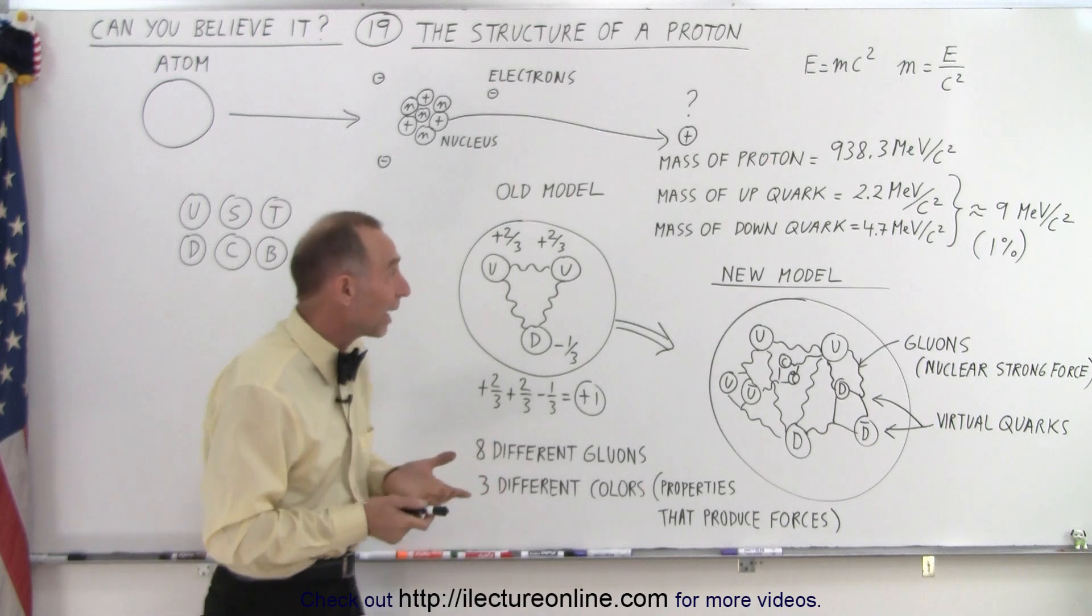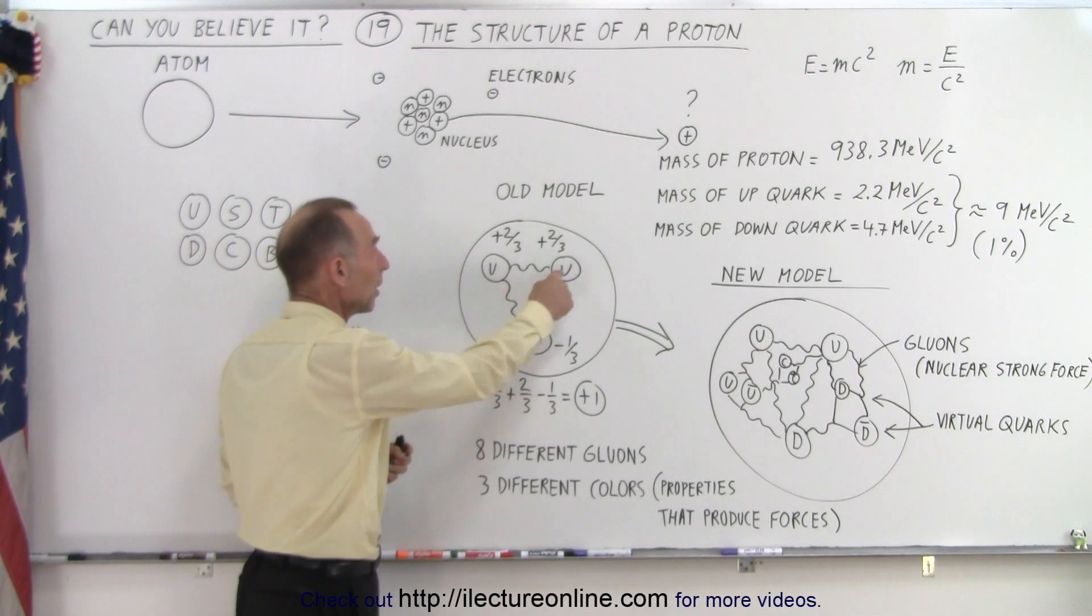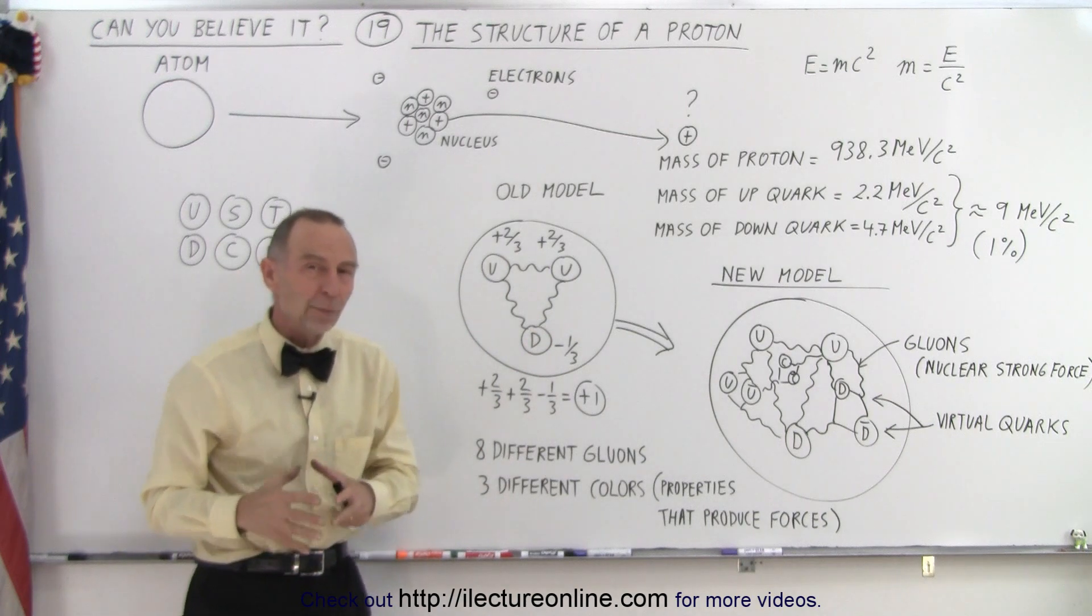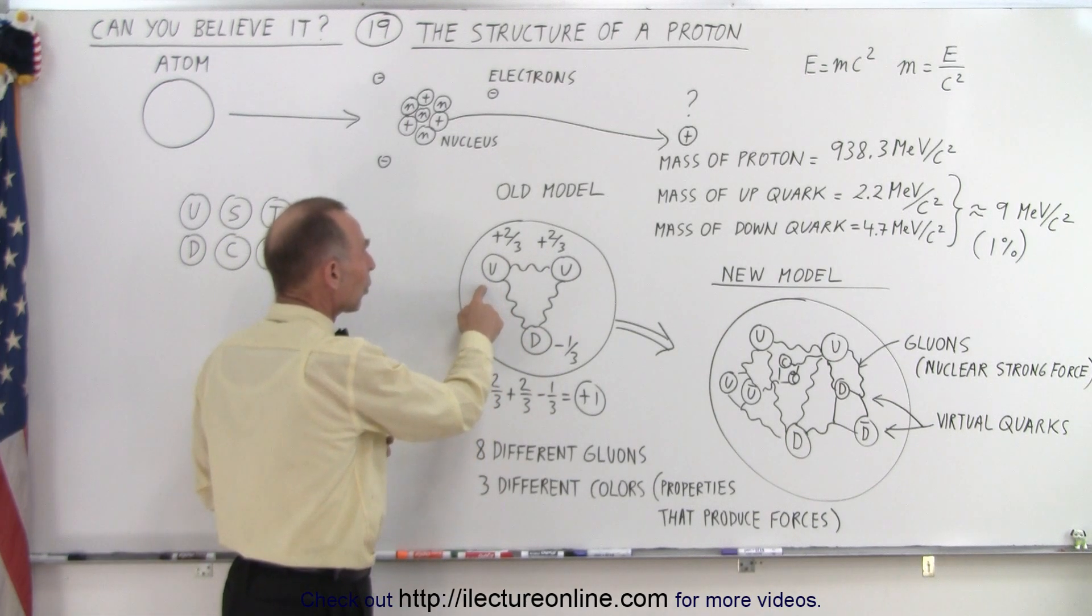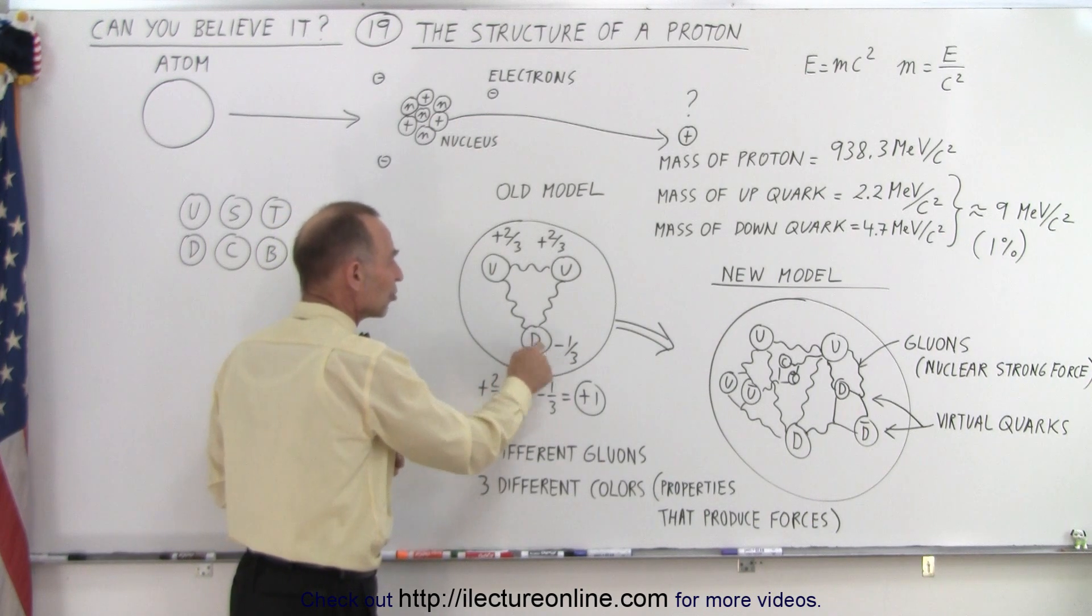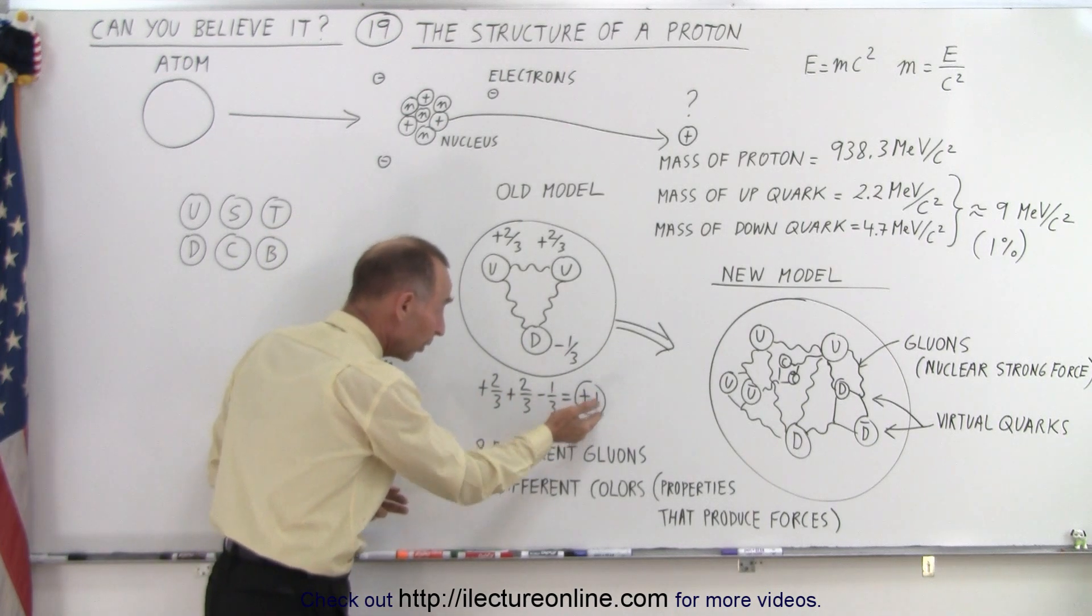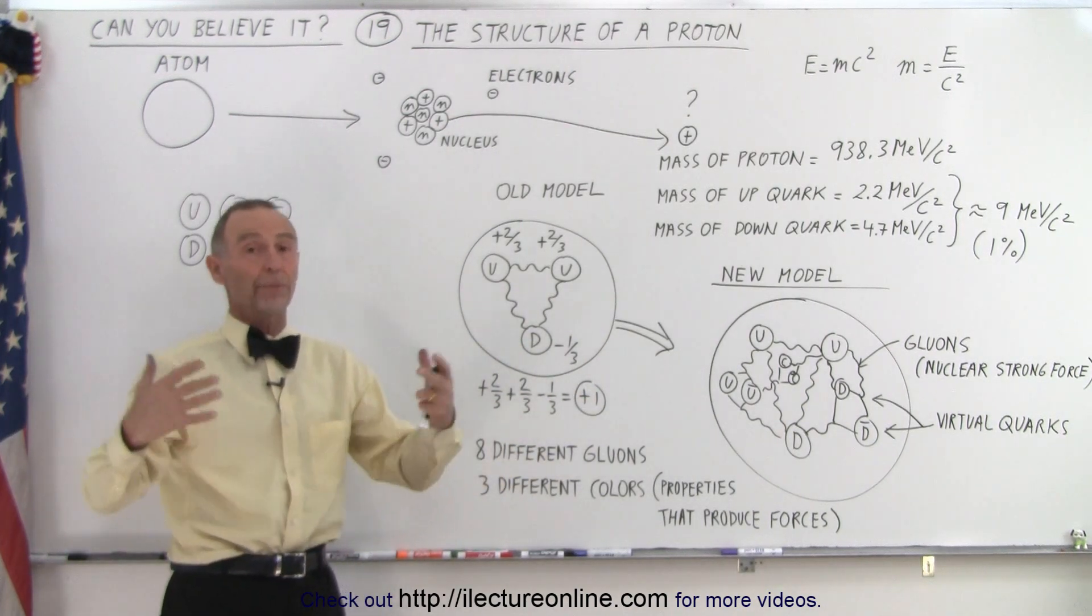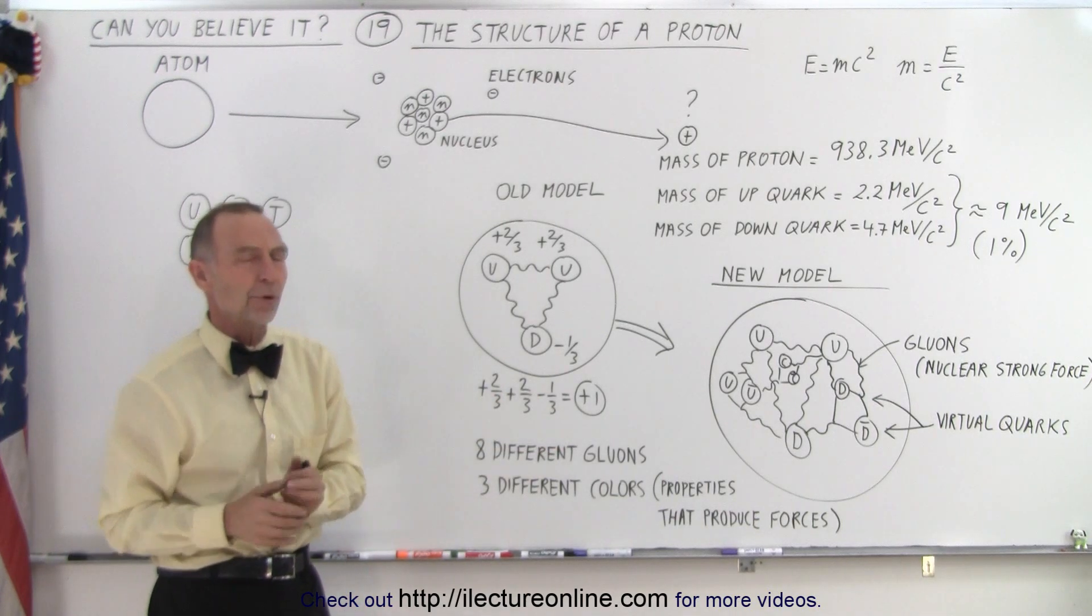Now, the original model was that a proton was made out of three quarks, two ups and one down, and we found that the charge property of the quarks was that the up quarks had a positive charge of two-thirds, and the down quark had a negative charge of minus one-third. When you add all those up, they add up to plus one, and that was indeed the case for a proton. A proton has a plus-one charge, so all that began to fit pretty well.